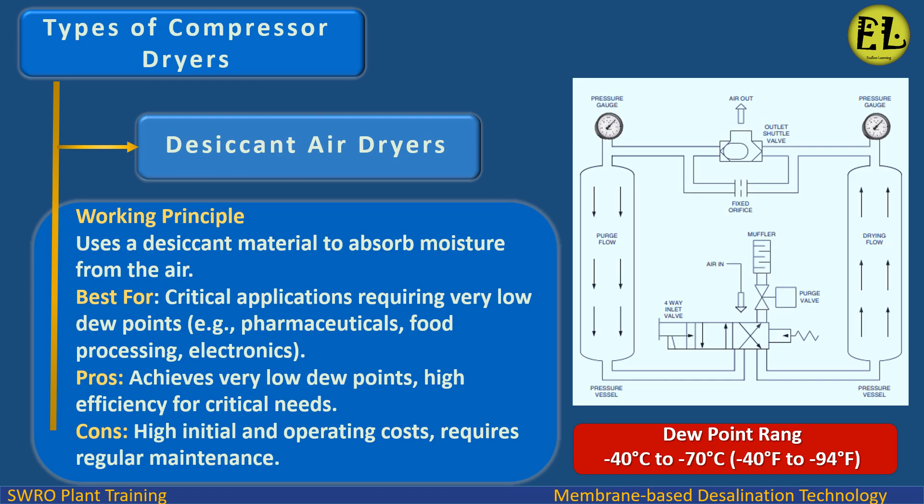Desiccant air dryers. Working principle: uses a desiccant material to absorb moisture from the air. Best for critical applications requiring very low dew points, e.g., pharmaceuticals, food processing, electronics. Pros: achieves very low dew points, high efficiency for critical needs. Cons: high initial and operating costs, requires regular maintenance. Dew point range: minus 40°C to minus 70°C (minus 40°F to minus 94°F).